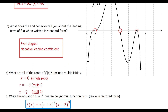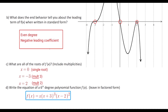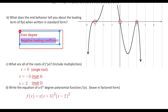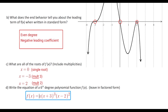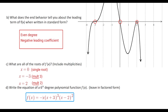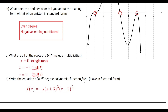Because the graph opens downward — down to the left and down to the right — the leading coefficient must be negative, so we put a negative sign in front. This doesn't affect the roots but does affect the end behavior. Our degree is 1 + 3 + 2 = 6, which is even — that checks out. We leave it in factored form as instructed, and that's the end of number one.